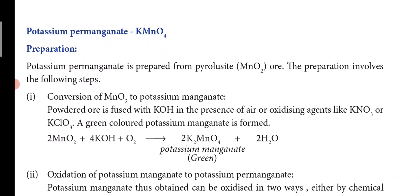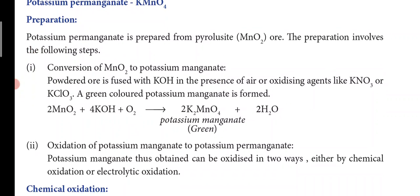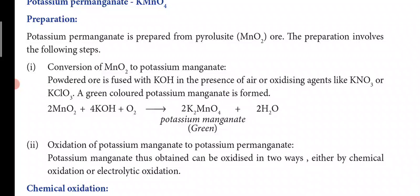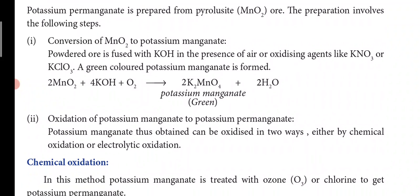Now potassium permanganate — its formula is KMnO₄. Note that K and M are capital letters, while 'n' in manganese is small: KMnO₄. Potassium permanganate is prepared from pyrolusite, which is MnO₂ (manganese dioxide). The preparation involves two steps: first, convert manganese dioxide to potassium manganate by reacting MnO₂ with potassium hydroxide in the presence of air, giving green-colored K₂MnO₄.